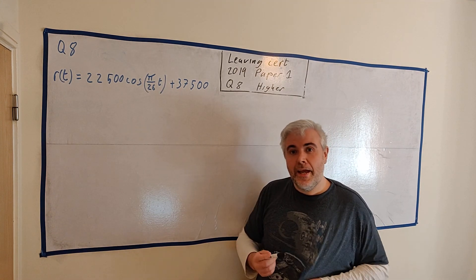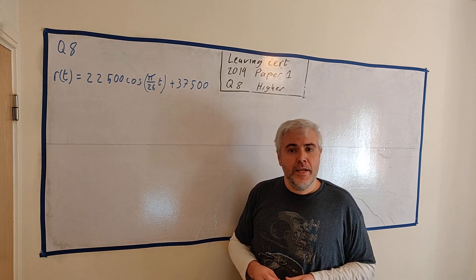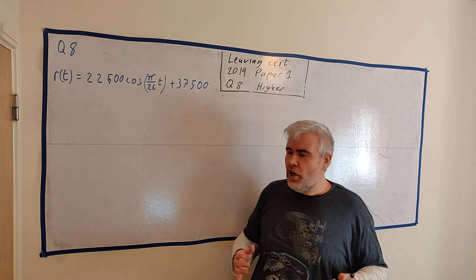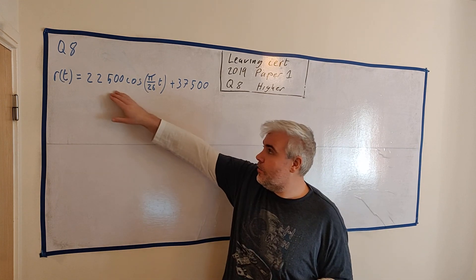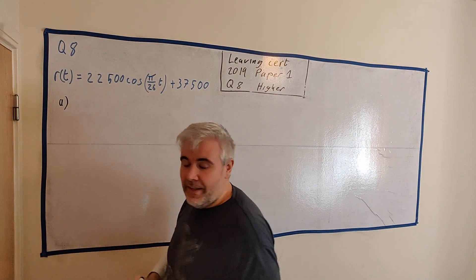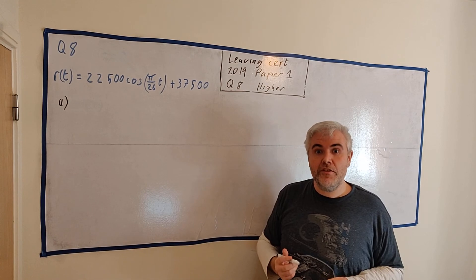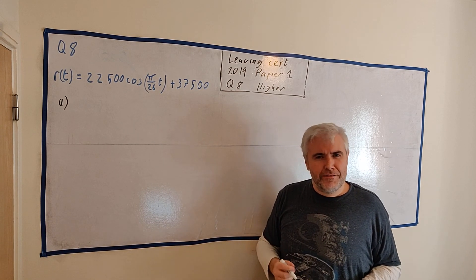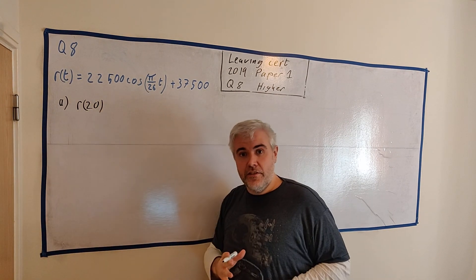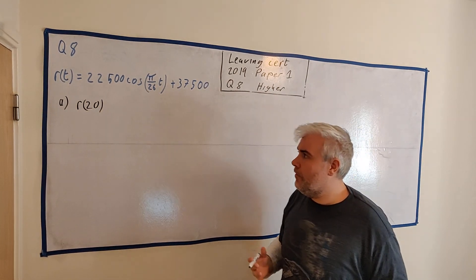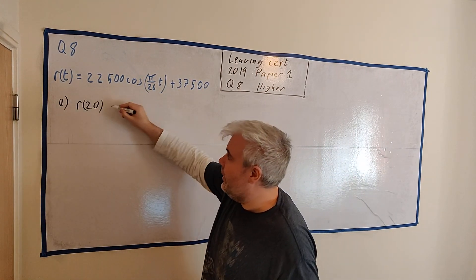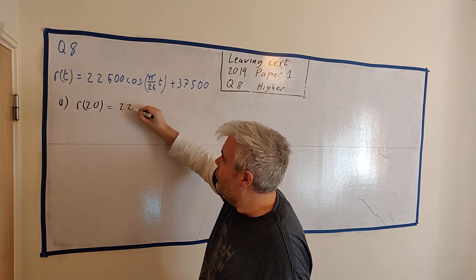One way students lose marks in exams is by getting too confused by a question, especially a big bulky one like this. Try to stick to the main facts. For part a, they ask: what is the revenue when t is 20 — that is, what is the revenue after 20 weeks? This is really straightforward, something a person at a much lower level could do.